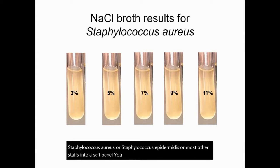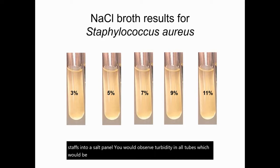This is what you would observe if you inoculate Staphylococcus aureus, Staphylococcus epidermidis, or most other staphs into a salt panel. You would observe turbidity in all tubes, which would be a positive result in all tubes, because they are salt tolerant.